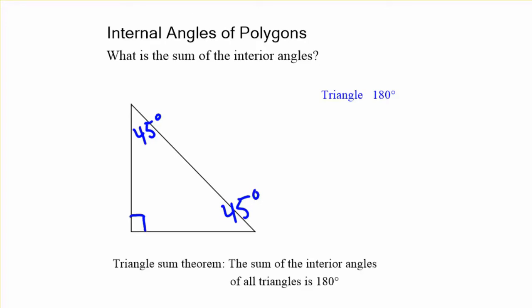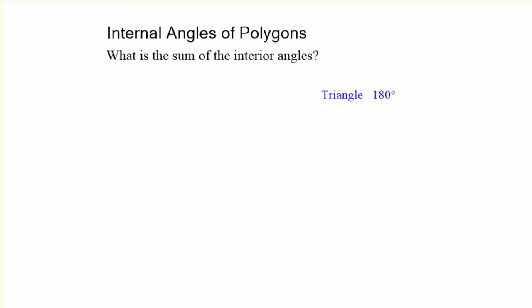So, what about a four-sided figure? Let's try a quadrilateral, a typical square. Well, we can make that into two triangles. We start at that vertex, draw a line across, and you have two triangles. They add up to 180 degrees each.